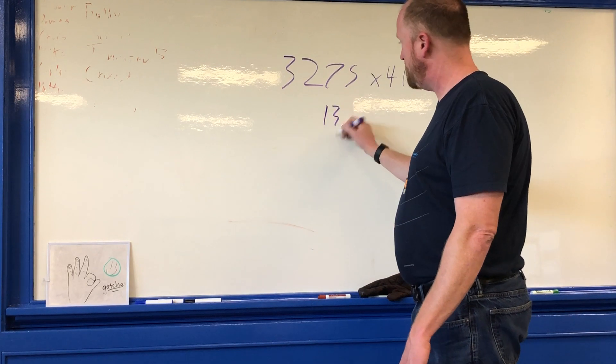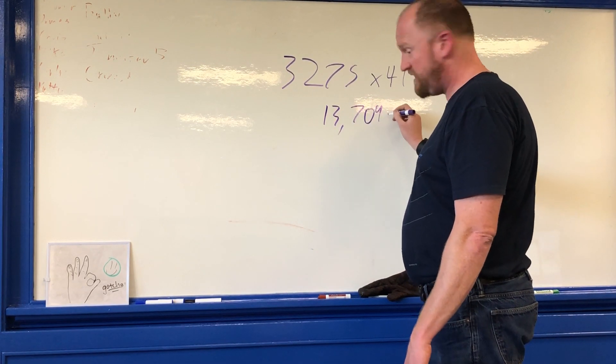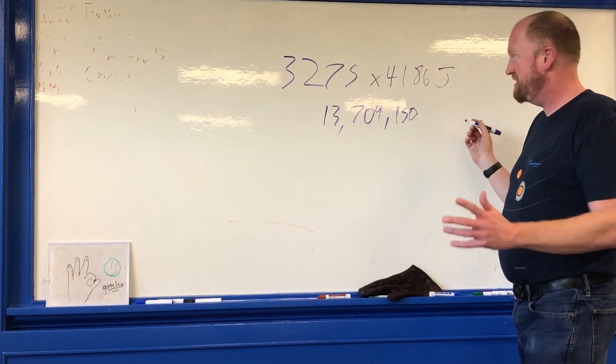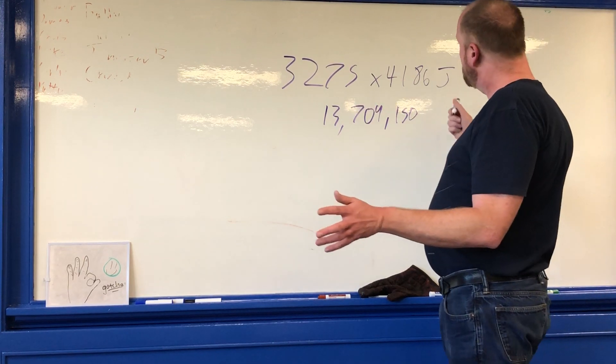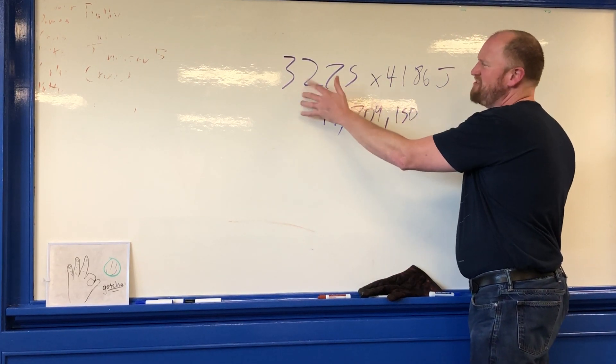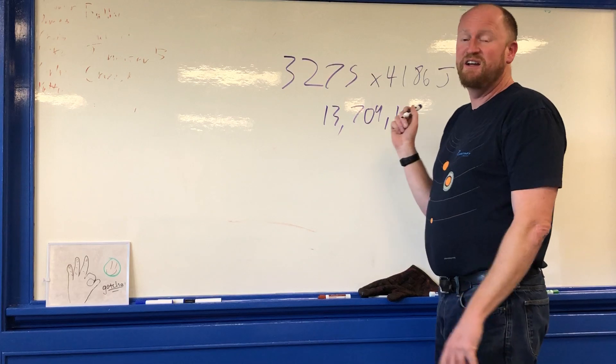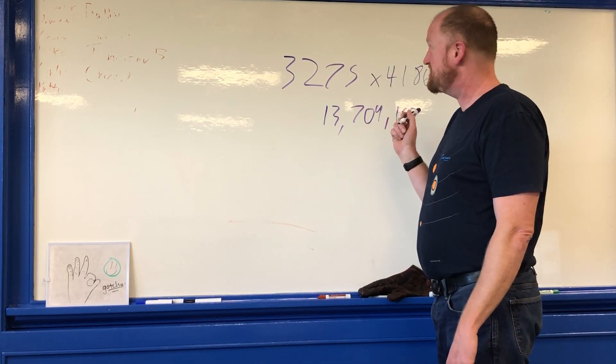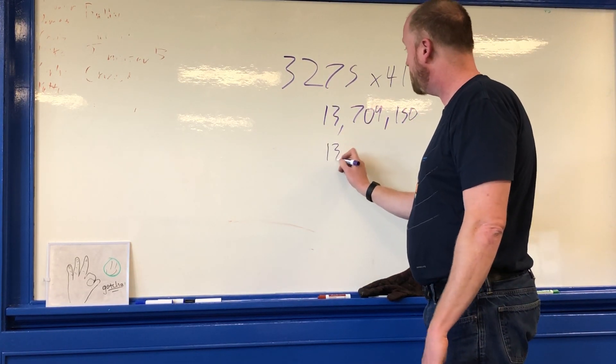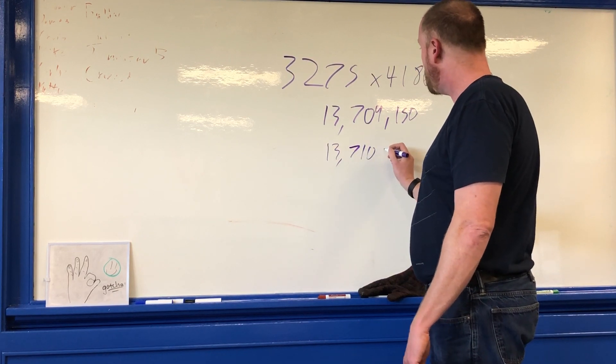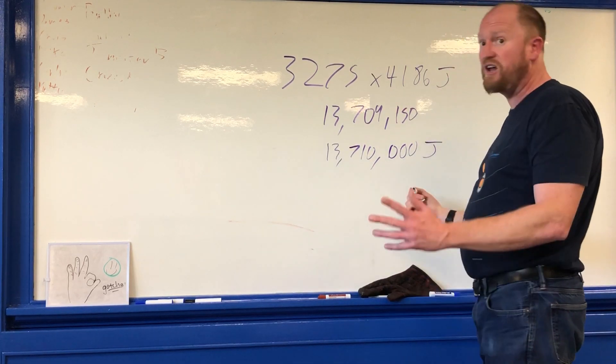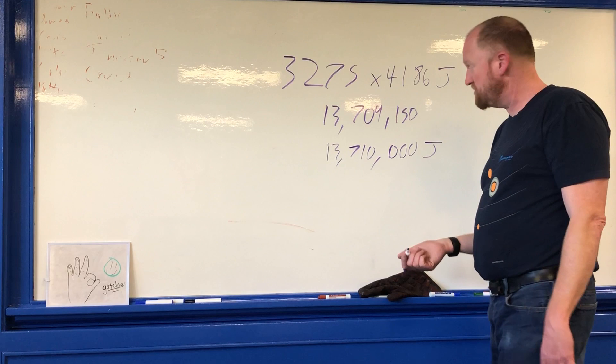I get 13,709,150. Now by the way, that is 8 sig figs, but none of these numbers are that precise. This conversion is exact, but the website has given me this estimate. Does a website really know what my calorie intake needs to be? Anyway, both of these are 4 sig figs. We should round this to 4 sig figs. So I'm going to put down 13,710,000 joules, which is a lot. You can also think of it as 13.7 megajoules if you want.